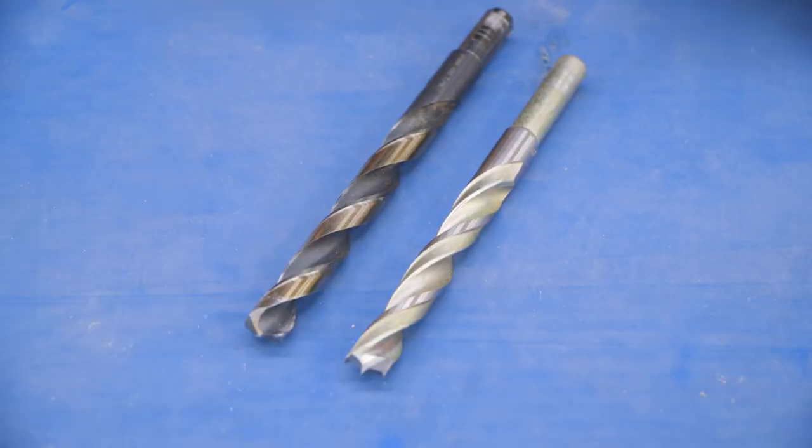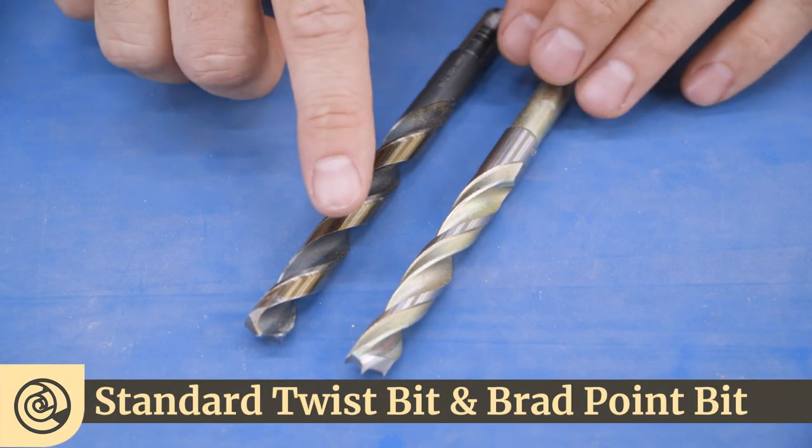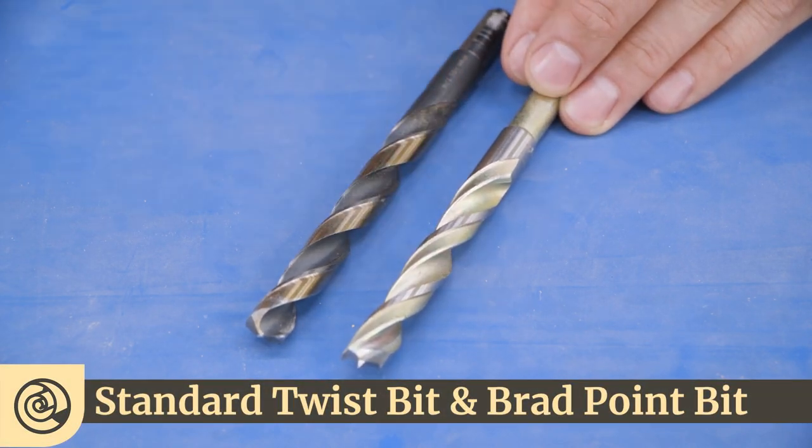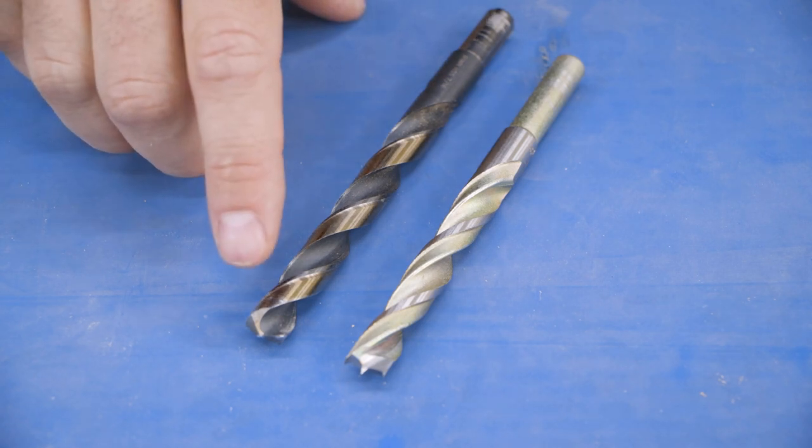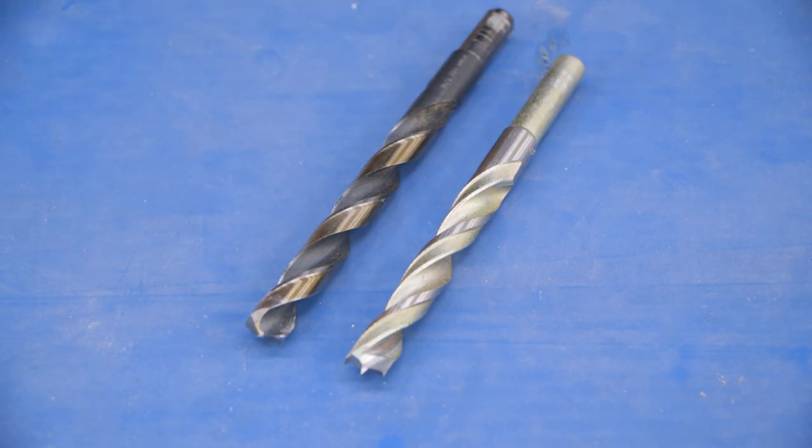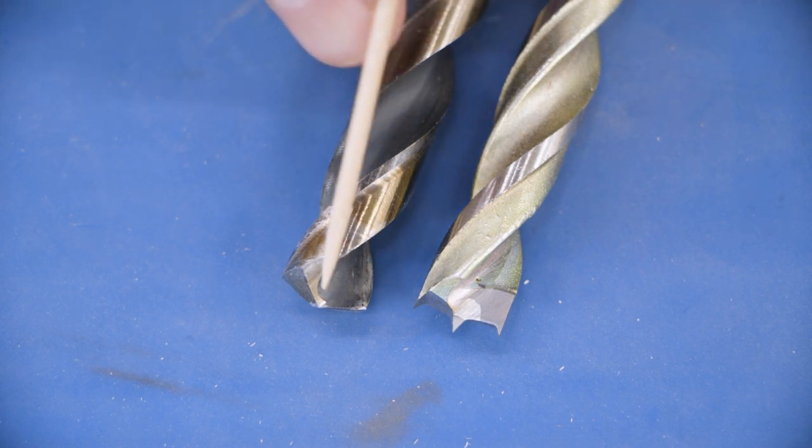First, let's talk about regular drill bits. I've got two examples here: a standard twist bit, and this is called a Brad Point bit. Obviously they look very similar, but where they differ is at the very tip with the type of cutting action that they have. A twist bit has this conical shape here.